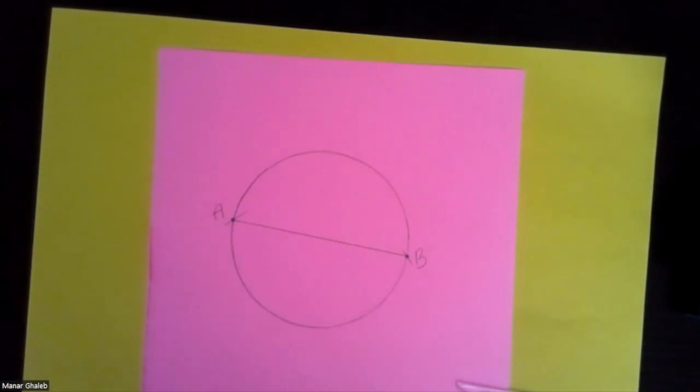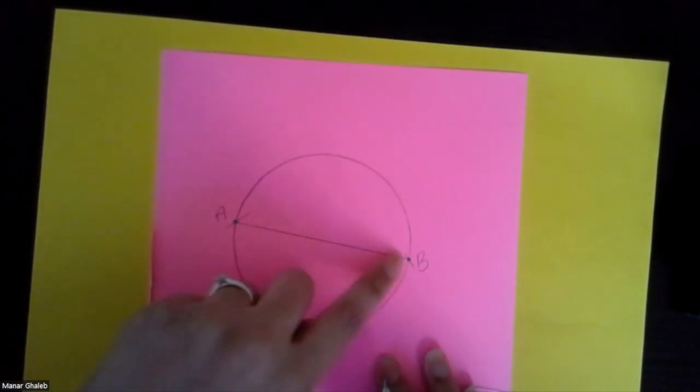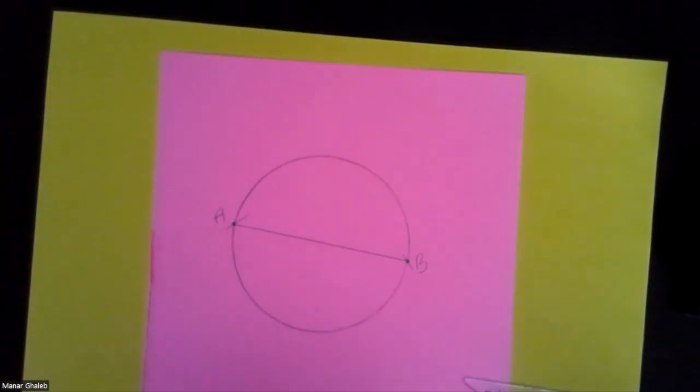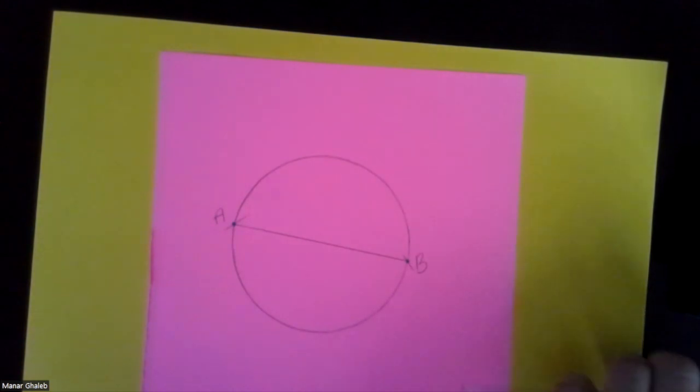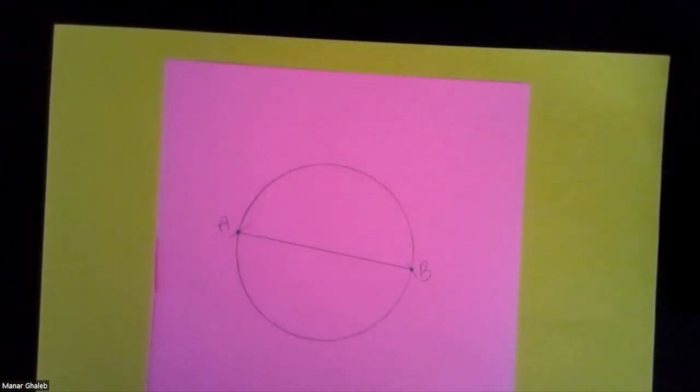So what I've done right now is I've actually created a diameter. If I were to fold the circle this way, the crease line would be right here. So now I'm going to follow this procedure one more time and I'm going to create another diameter.